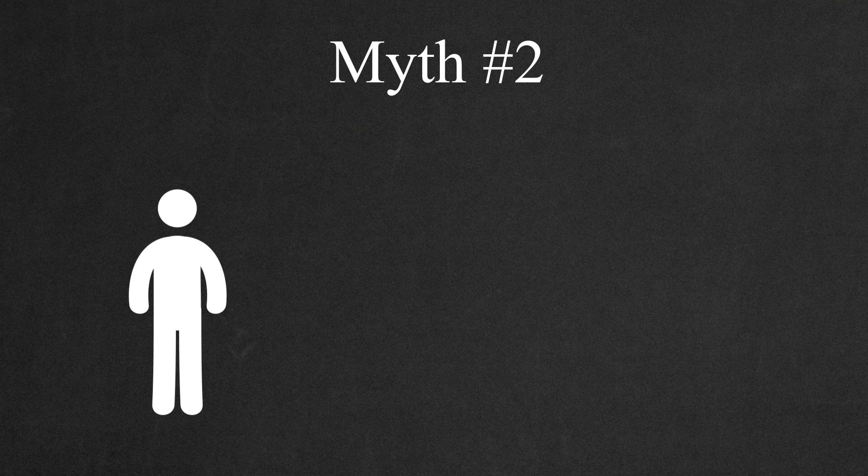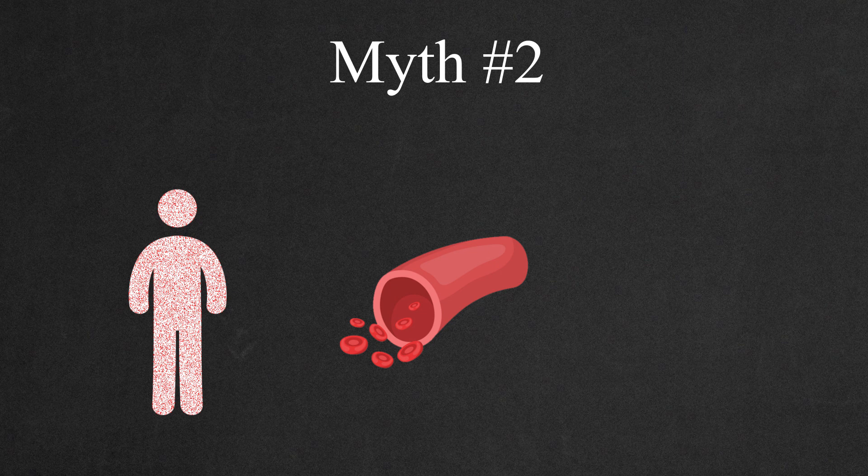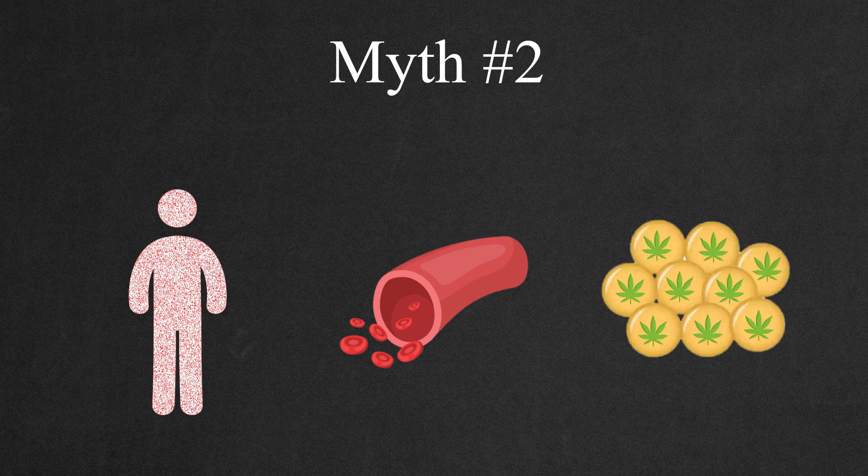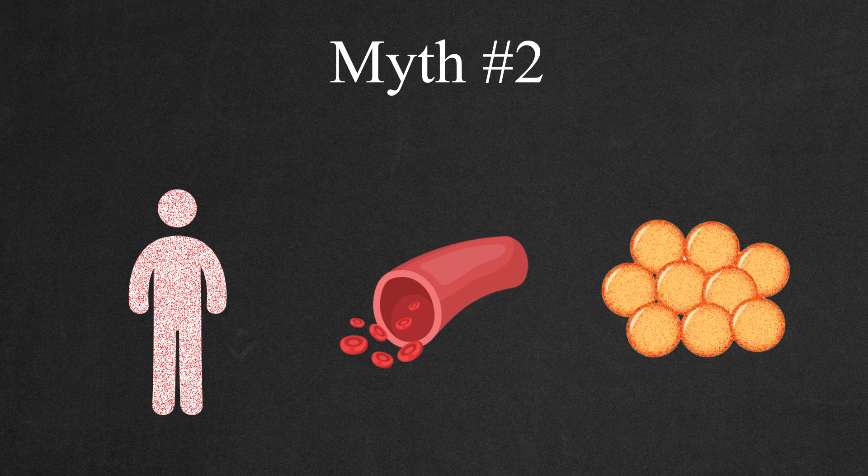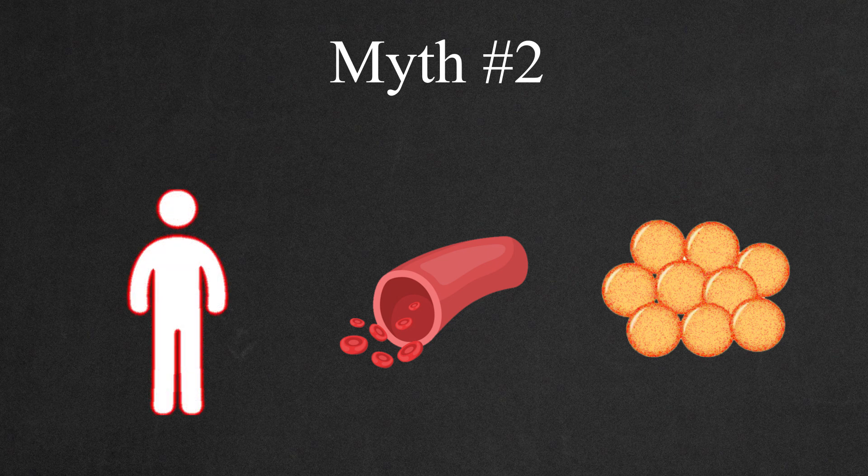The second myth is based on the fact that niacin causes flushing. Flushing happens when blood vessels dilate to increase blood flow. People assume that when blood vessels dilate, they'll be able to push THC out of the body faster. That's also not true. Niacin causes increased blood pressure and vasodilation in blood capillaries in skin only. So, the niacin flush effect doesn't help you release THC from fat cells.